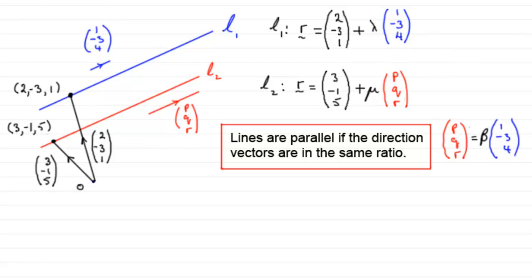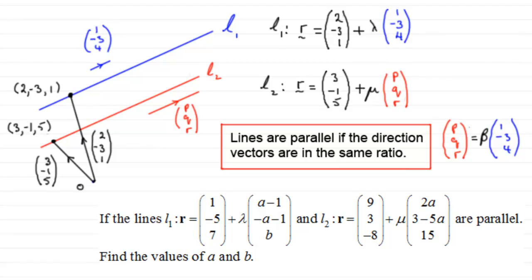Now I've got a question here that you might like to try. It's quite tricky, but definitely I would encourage you to have a go. We've got here, if the lines L1 is such that the position vector of any point on it is equal to 1, -5, 7, plus λ times (a-1, -a-1, b). And L2 is a line where the position vector is equal to 9, 3, -8, plus μ times (2a, 3-5a, 15). If these lines L1 and L2 are parallel, we've got to find the values of a and b. So why don't you pause the video and have a go at this one and come back when ready and I'll run through the solution. You should be able to then check your working with mine.